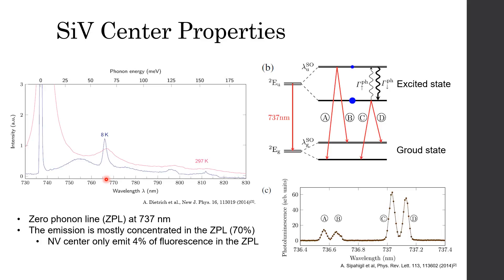SiV center's energy diagram is shown in the top right figure. Due to strong spin-orbit coupling, the center features two-fold orbitally split, spin-degenerate ground and excited states at zero magnetic field, leading to the 4-line fine structure in the ZPL emission spectrum at 737 nanometer. At cryogenic temperature, the ZPL in the PL spectrum reveals a fine structure composed of four transitions around 737 nanometer, as shown in the bottom right figure.